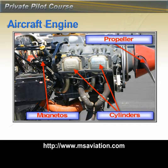Also toward the back of the engine, you'll see an arrow pointing toward the magnetos. There are two on this engine — one is shown here and the other is on the other side. The magnetos produce the spark for ignition. More on magnetos a little later.